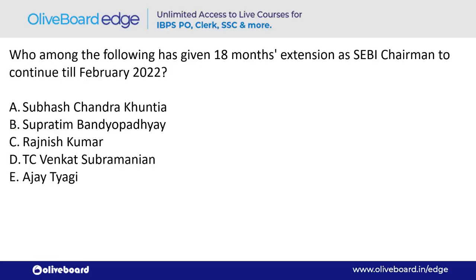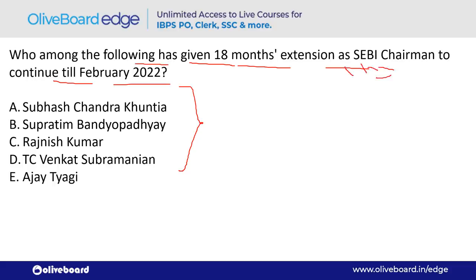Who was given an 18-month extension as SEBI Chairman to continue till February 2022? The answer is Ajay Tyagi — option E. SEBI stands for Securities and Exchange Board of India; its headquarter is in Mumbai.